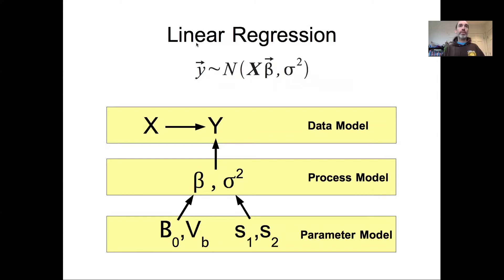For a slightly more complicated linear regression model, we now have within the data model stage that X informs Y, and also the regression parameters beta and the residual error sigma both inform Y. The process model stage focuses on the parameters — beta and sigma — and our parameter model stage focuses on the priors on those parameters.